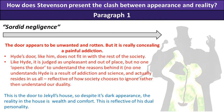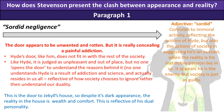This is also the door to Jekyll's house, so despite its dark appearance the reality inside is wealth and comfort, which reflects his dual personality. The adjective 'sordid' connotes immoral activity, reflecting the actions of Hyde but also the actions of society, suggesting he is an outcast — when the reality is his instinctive passion lies in us all. It appears he is the enemy, but society is just as guilty. We appear to be the innocent, better ones, but in reality we are no better than he is.